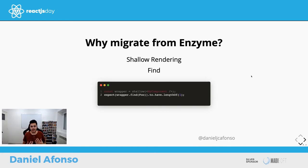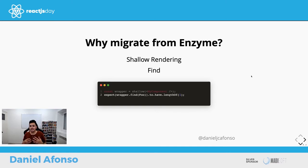The second issue is Enzyme's 'find'. It's how Enzyme lets you query for things on the DOM, but it's not restrictive — it allows you to search by class, ID, or even component name. This doesn't reflect how the user searches for things and isn't really accessible.